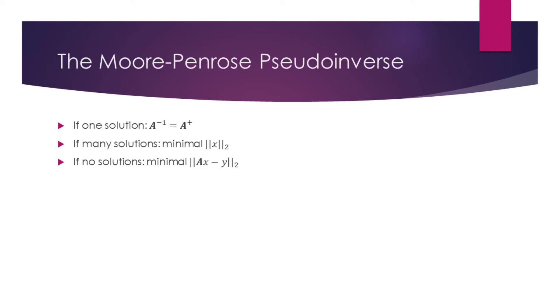If A has more columns than rows and the equation may have many solutions, using pseudoinverse we will find the x that has the smallest possible Euclidean norm.